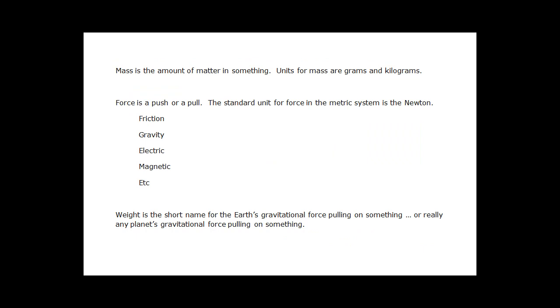Now on to the difference between mass and weight. Mass is the amount of matter in something. How much stuff is in an object. The units for mass in the metric system are grams and kilograms.